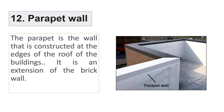The twelfth type is parapet walls. Parapet walls are made at the edges of the roof and are mostly an extension of the walls present below the roof. Safety and security are the only two purposes of making parapet walls.